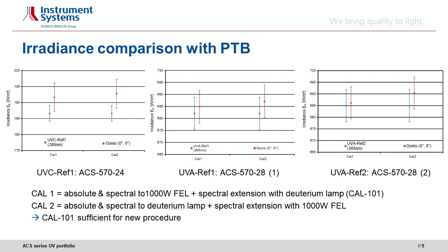How good is our calibration concept and how do we keep the traceability chain unbroken? The different irradiance calibrations were analyzed prior to measurement. CAL1 corresponds to the spectral and absolute calibration with the 1000W FEL halogen lamp, spectrally extended in the UVA range with the deuterium lamp. CAL2 corresponds to the spectral and absolute calibration with the deuterium lamp, spectrally extended with the 1000W FEL halogen lamp. Measurements with the two UVA ACM models and the UVC ACM model show that the measurement in the 0-0 position of the goniometer corresponds very well to the calibration on the optical bench. It can thus be concluded that the usual irradiance calibration — CAL1 — in the UVA range is adequate for our new procedure.